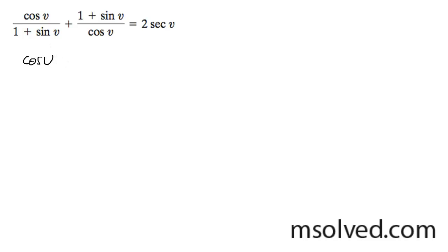For this first equation I'm going to multiply through by cosine squared. I'm going to get cosine squared v plus quantity 1 plus sine of v squared, and all this is over 1 plus sine v times the cosine v.